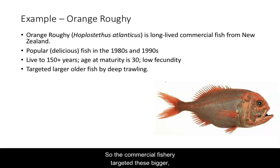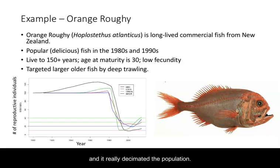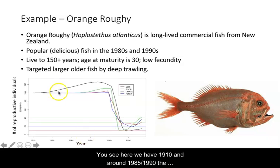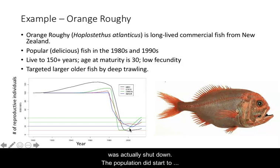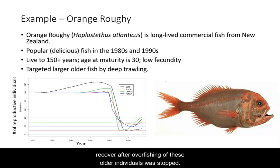The commercial fishery targeted these bigger, older fish by deep trawling, and it really decimated the population. Around 1985–1990, the stocks collapsed to the point that by 2000 there were very few reproductive individuals. This fishery was actually shut down and did start to recover after overfishing of these older individuals was stopped.